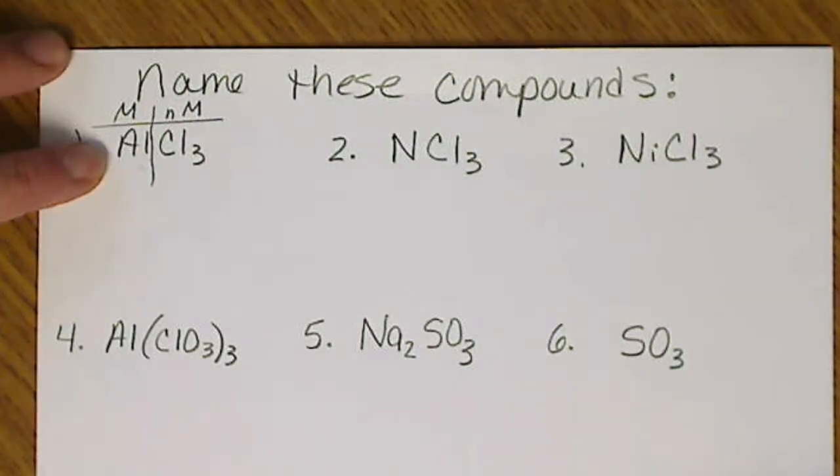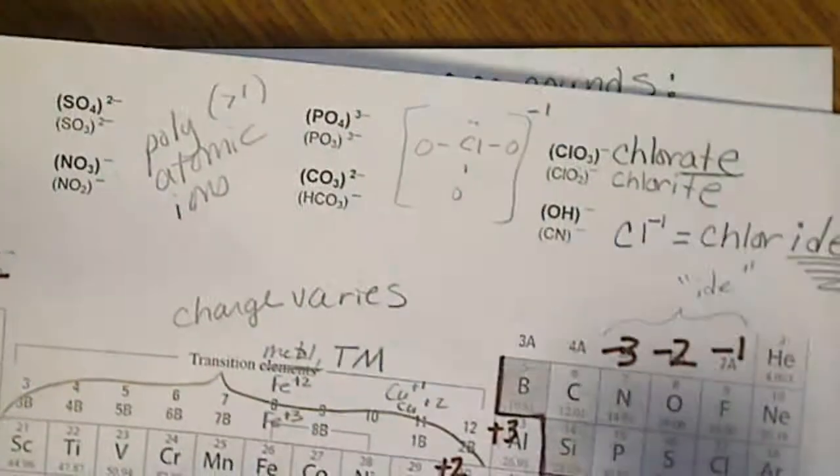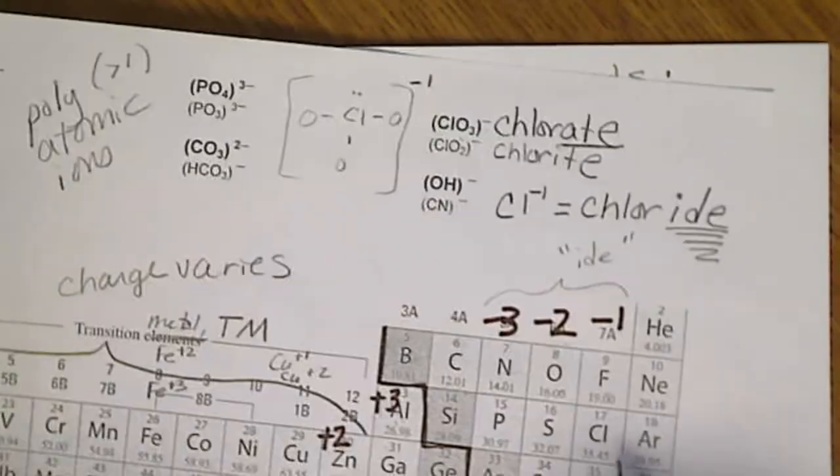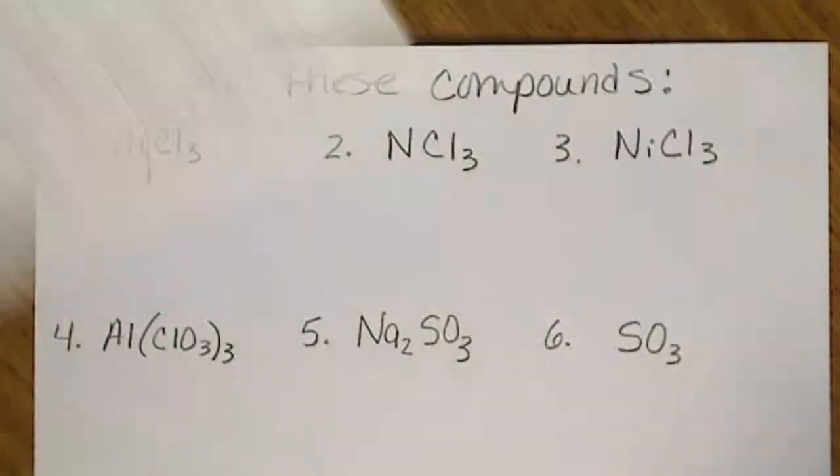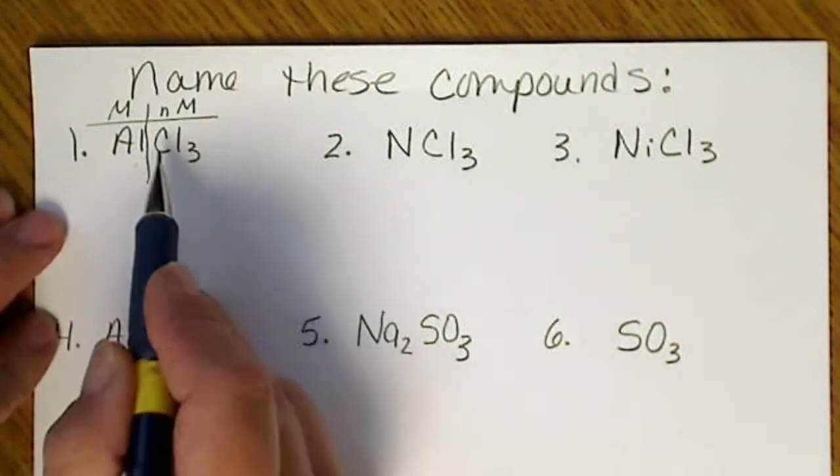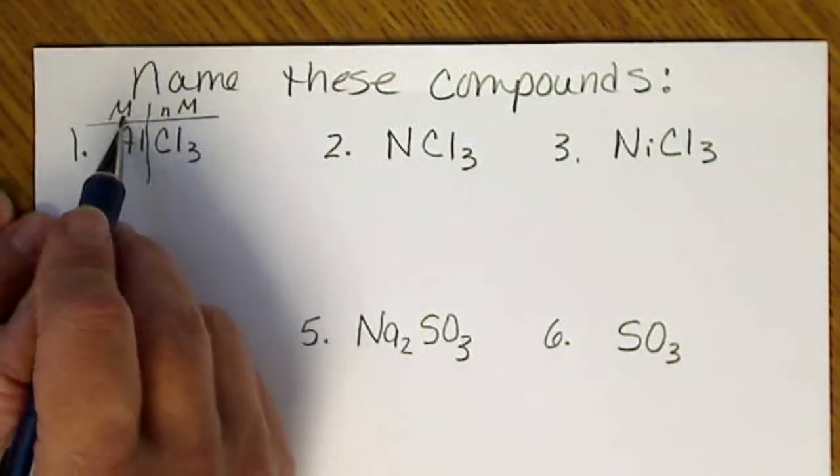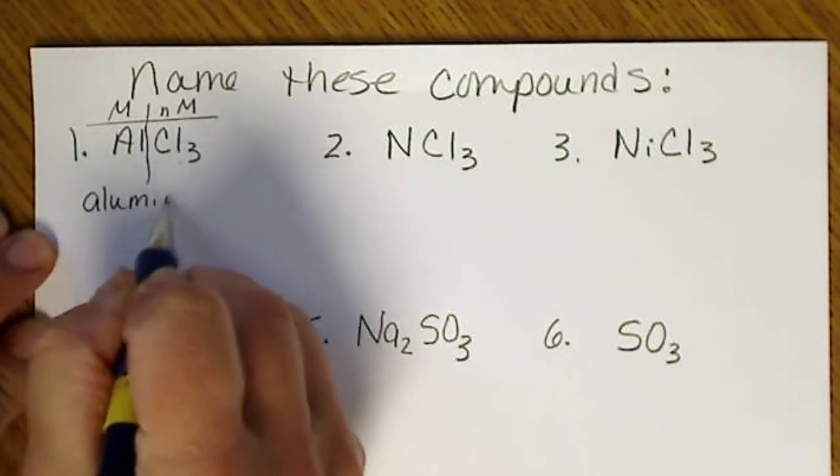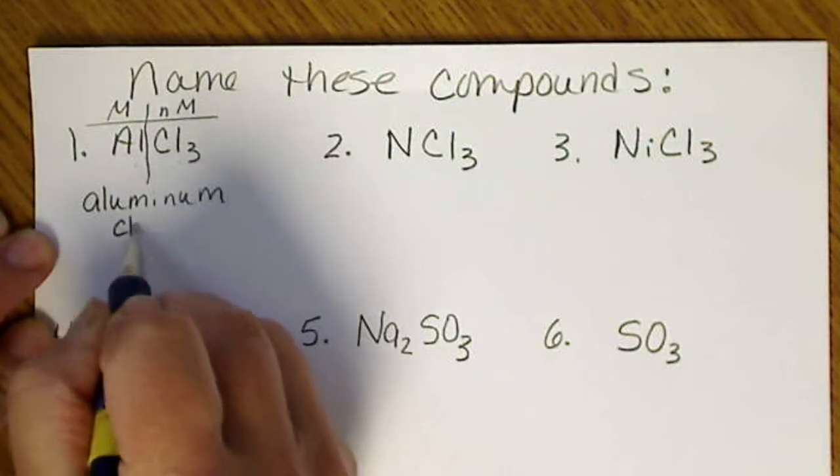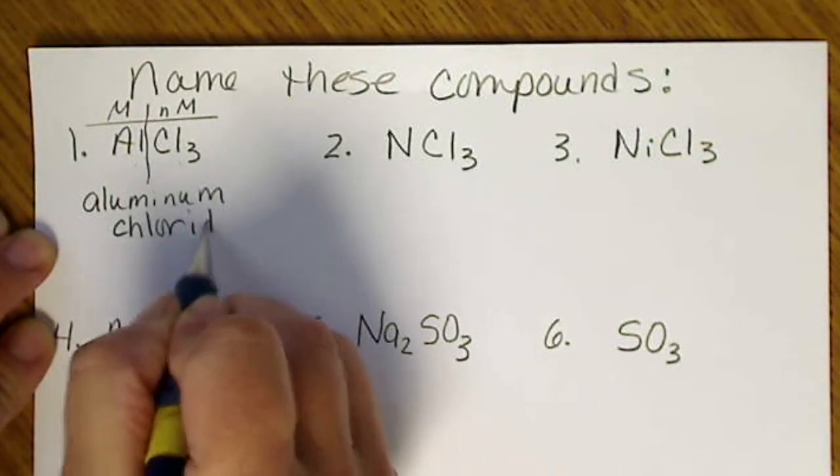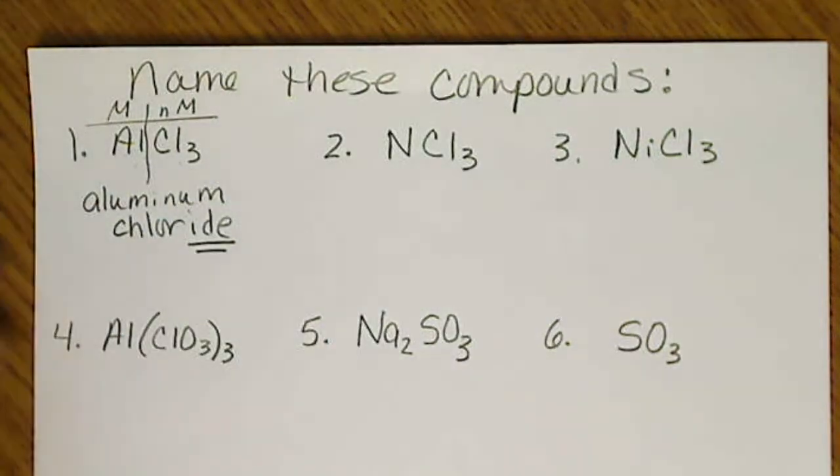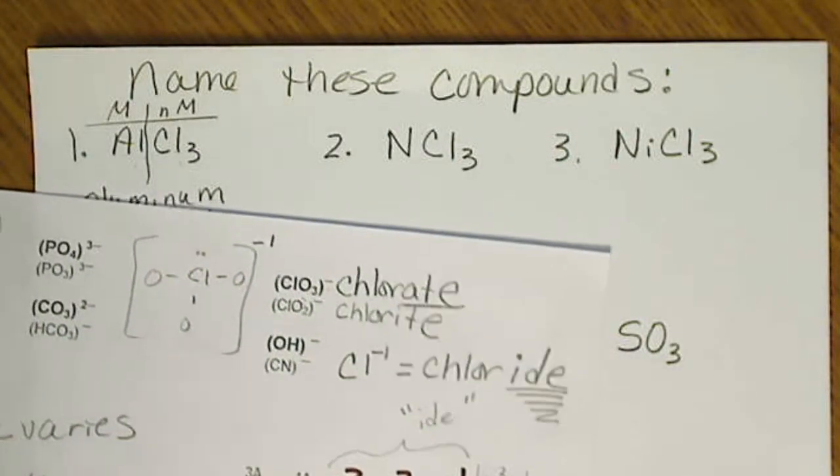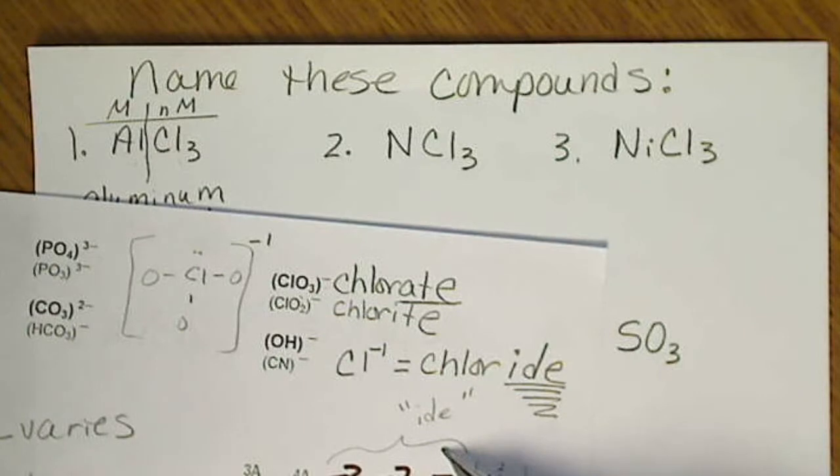Does aluminum need a Roman numeral? It's not a transition metal. We know the charge on aluminum, and we have Cl, the atom. There's only one of them. So this is a simple metal and a non-metal. This is aluminum chloride because symbols on the periodic table, non-metals, turn into -ide endings.